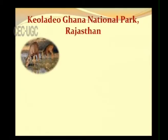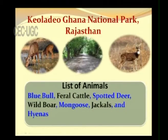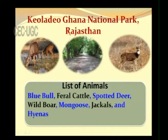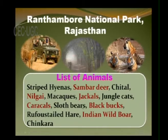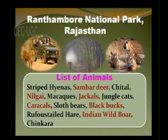Keoladeo Ghana National Park in Rajasthan hosts blue bull (Nilgai), feral cattle, spotted deer, wild boar, mongoose, jackals, and hyenas. Ranthambore National Park, also in Rajasthan, is home to tigers, striped hyenas, sambar deer, chital, Nilgai, macaques, jackals, jungle cats, caracals, sloth bears, blackbucks, hare, Indian wild boar, and chinkara. The Nilgai, chinkara, and sambar deer are particularly popular there.